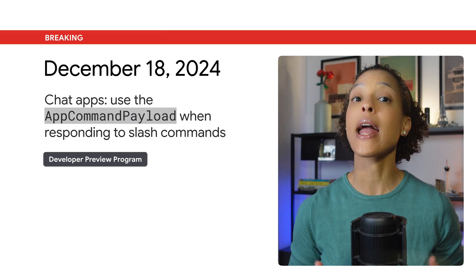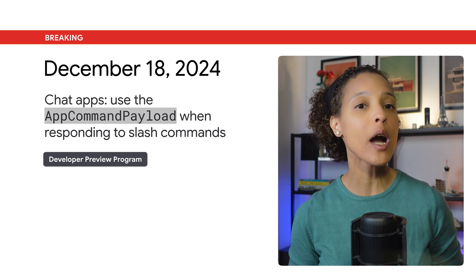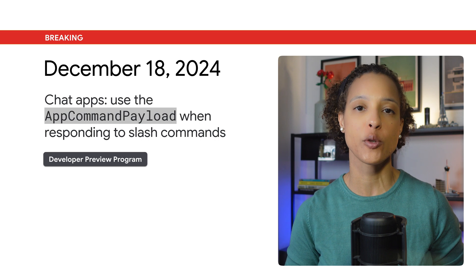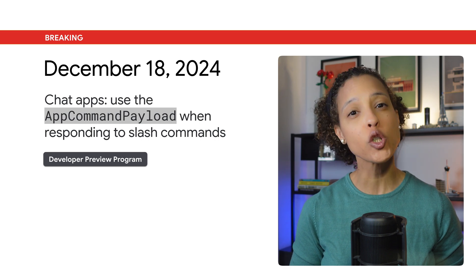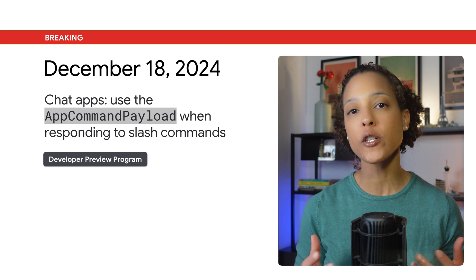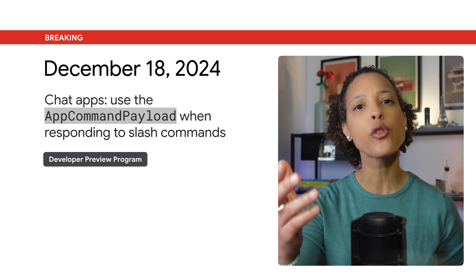To respond to slash commands and quick commands, Google Chat apps must now use the app command payload instead of a message payload. This change only has an impact on chat apps that are built as Google Workspace add-ons, a new feature available through the developer preview program. To learn more about how to build Google Workspace add-ons that extend Google Chat, please find the link in the video description below.